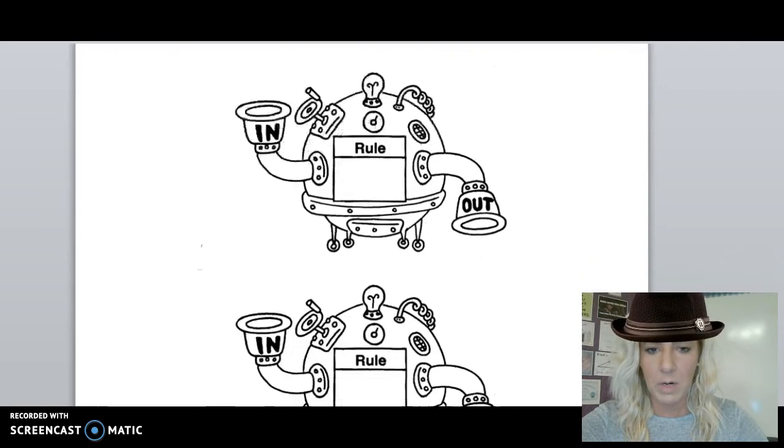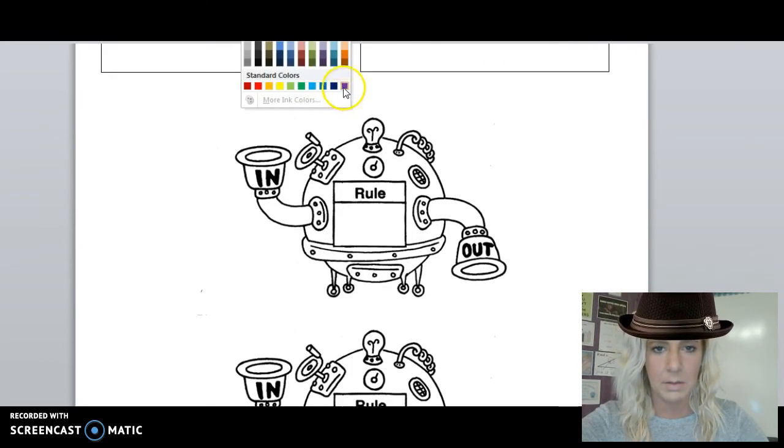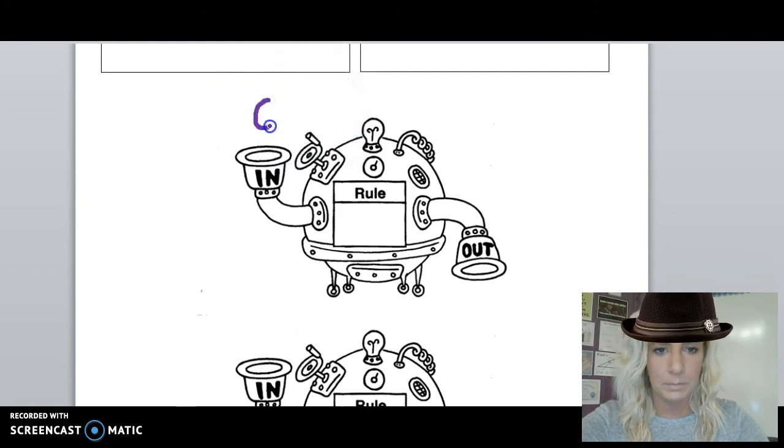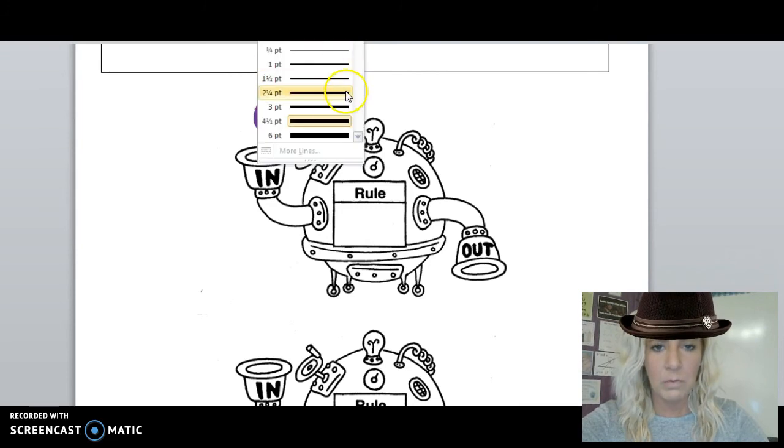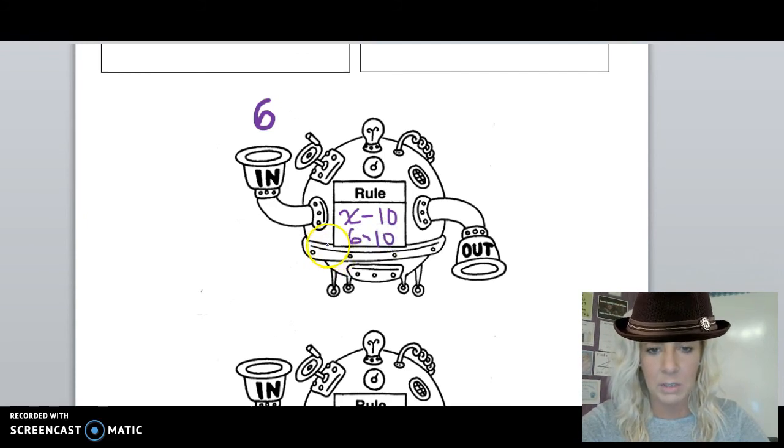Let's do two examples on your graphic organizer. On our first example, let's have an input of 6. My function rule is going to be x minus 10. X is my input value. In this case, 6 minus 10. And in this case, you can use a calculator to help you with your computation. 6 minus 10 gives me negative 4.